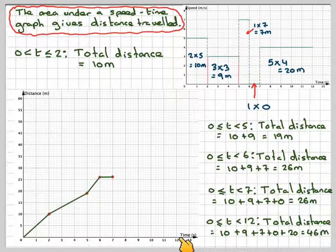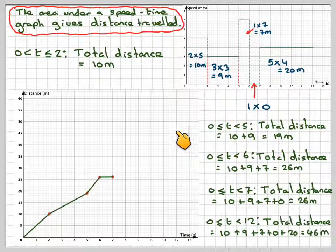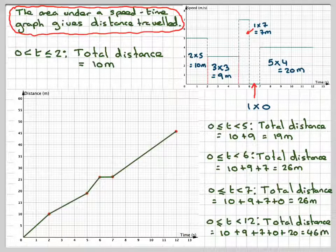So at t=12, I need to put a dot at 46, which is there, and then join it up with a straight line.